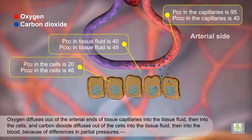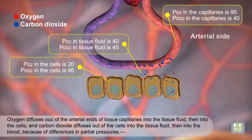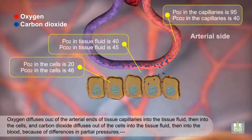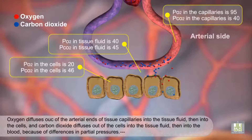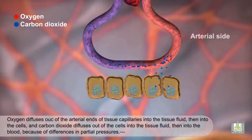Oxygen diffuses out of the arterial ends of tissue capillaries into the tissue fluid, then into the cells, and carbon dioxide diffuses out of the cells into the tissue fluid, then into the blood, because of differences in partial pressures.